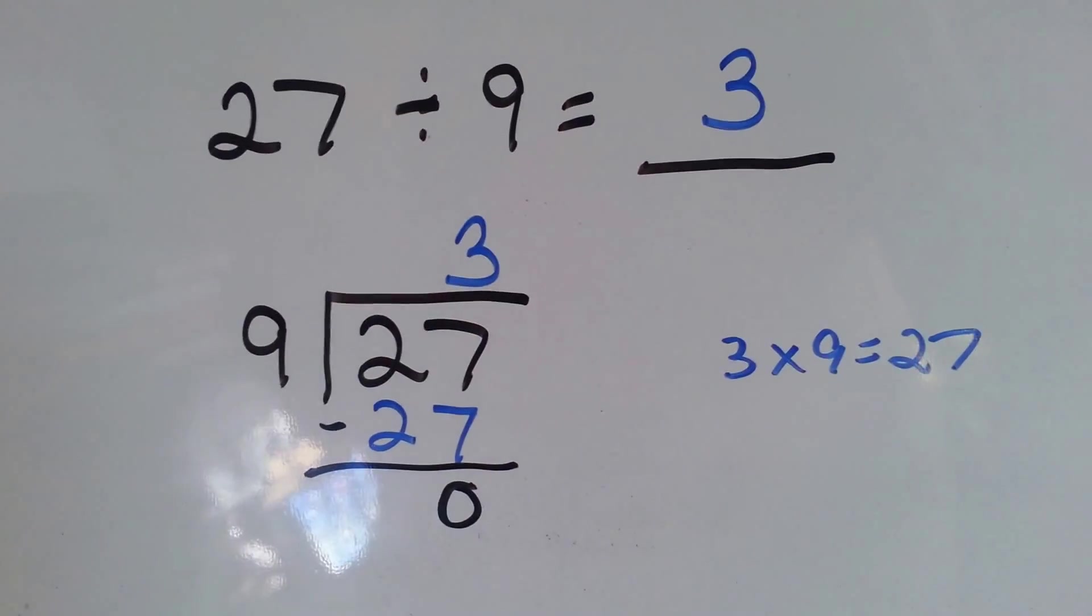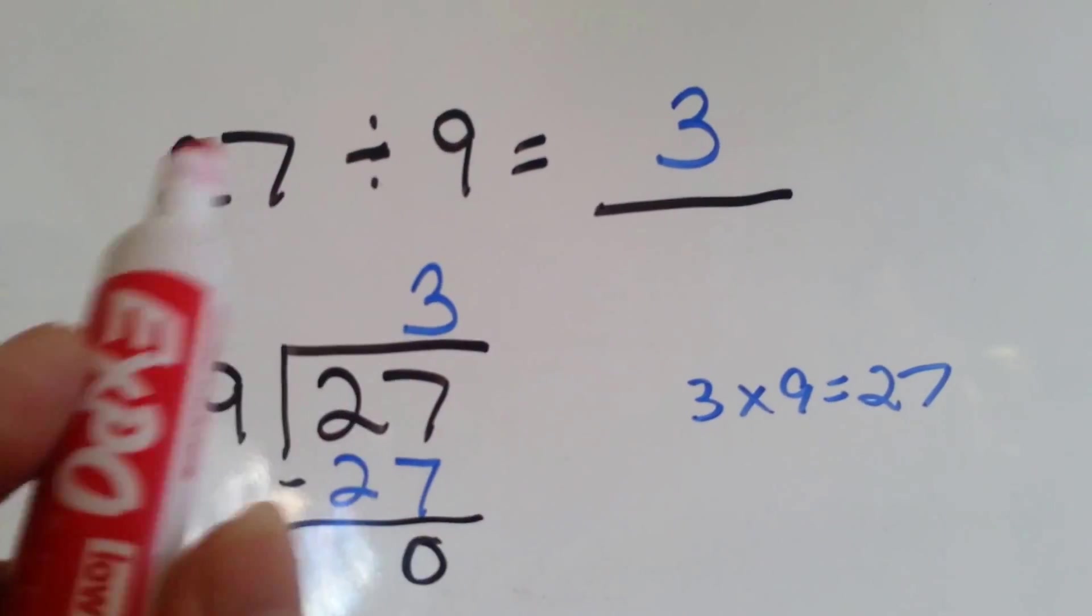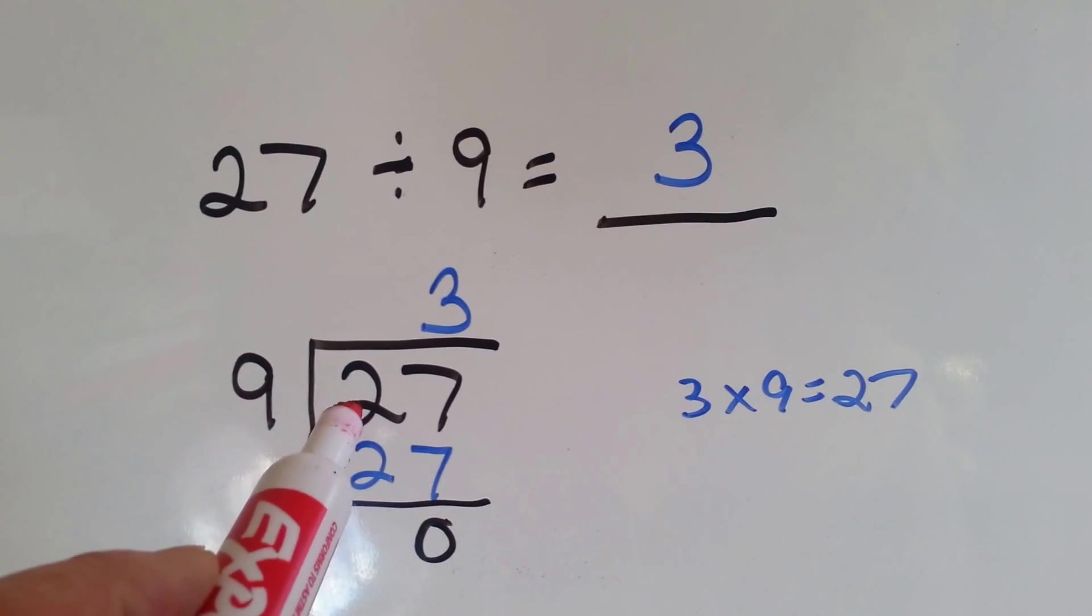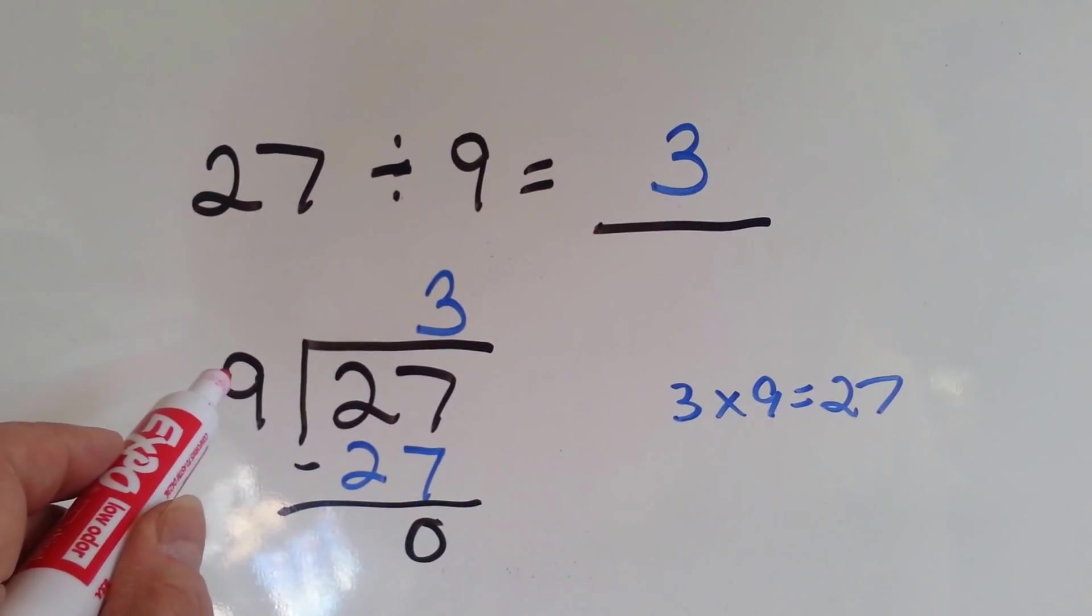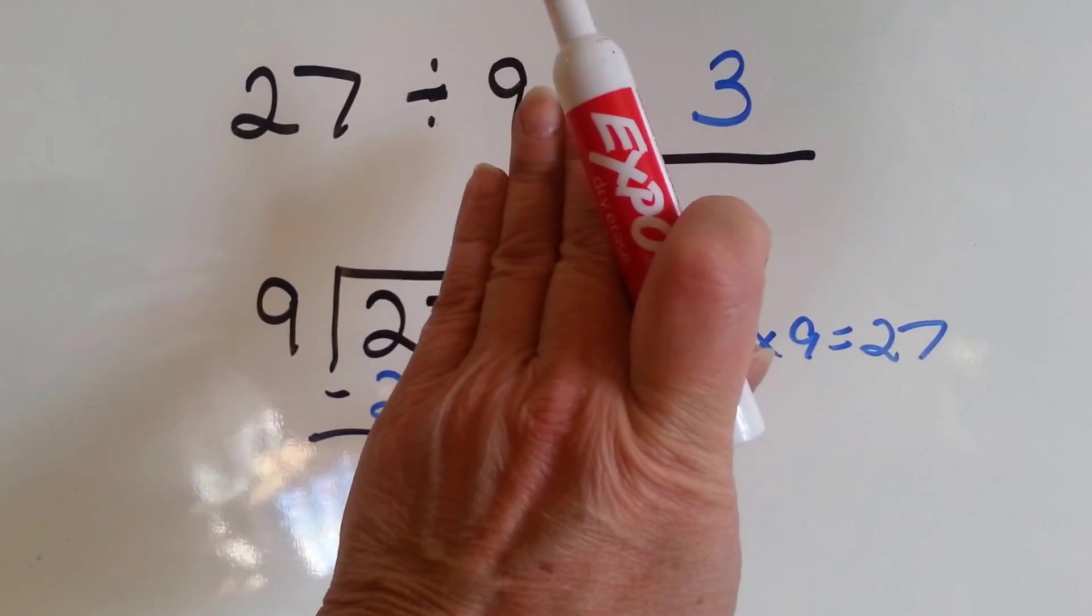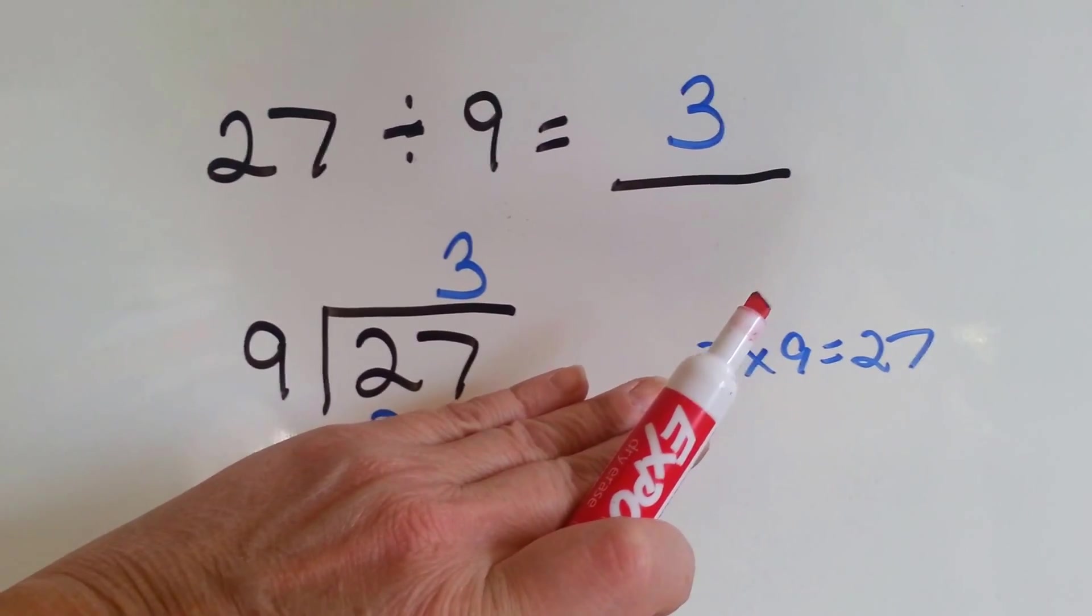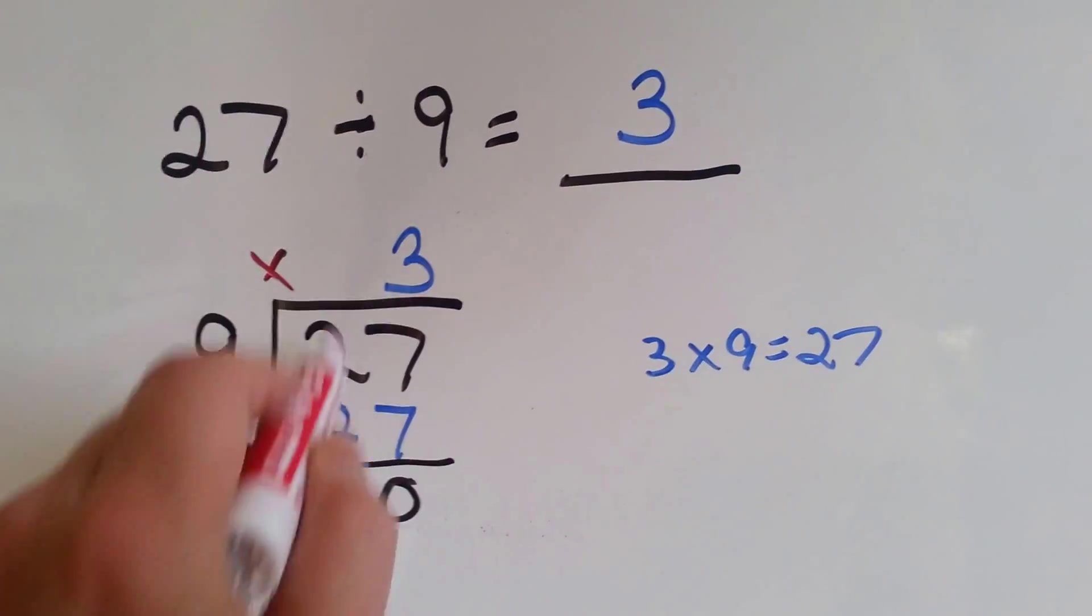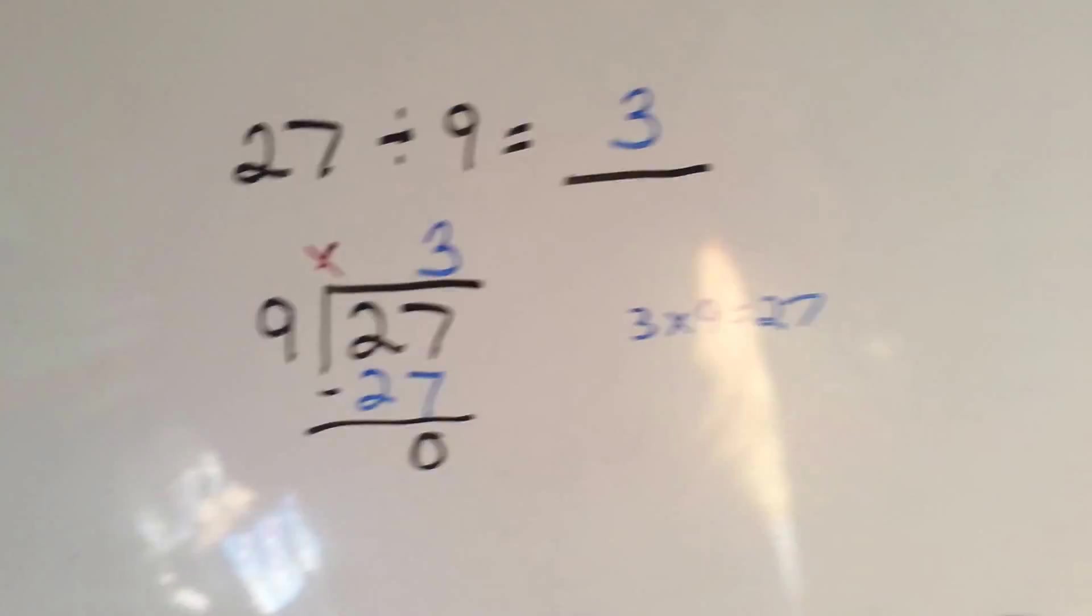Let's try another one. 27 divided by 9 equals 3. It's the same thing as 3 times 9 equals 27. Fact family. The big number, the dividend goes on the inside, the divisor goes on the outside, and the quotient goes up on the top. Can 9 fit into 2? No. Can it fit into 27? Yes. So that's why the 3 goes above the 7. 9 times 3 is 27. We do our subtraction, and we get 0.